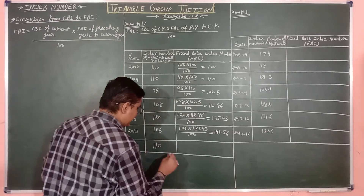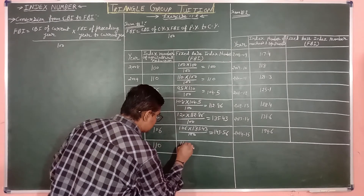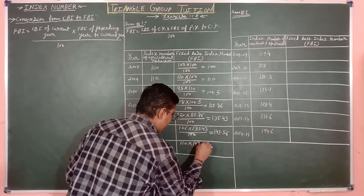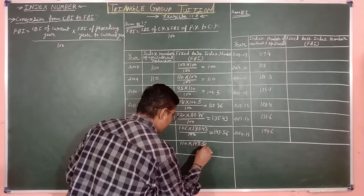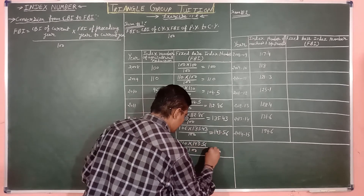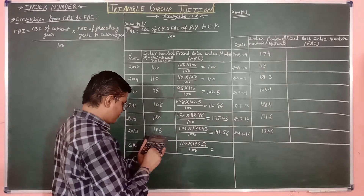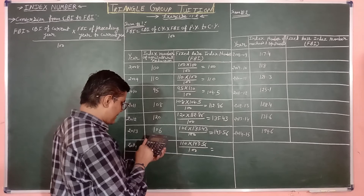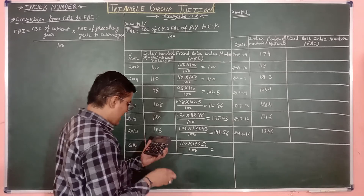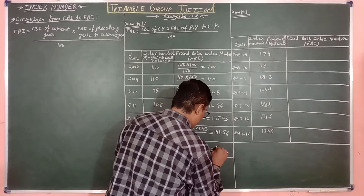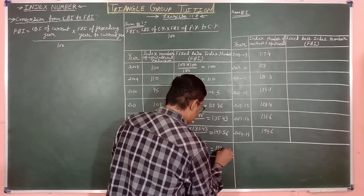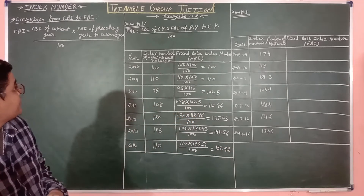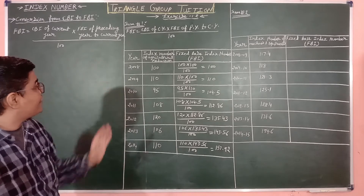Current year CBI is 110. Preceding year FBI is 143.56. Divide by 100. 110 multiplied by 143.56, divided by 100 — amount will be 157.92. Students, this is how Sum 1 is completely solved, in which we calculated CBI to FBI — chain base index number to fixed base index number.